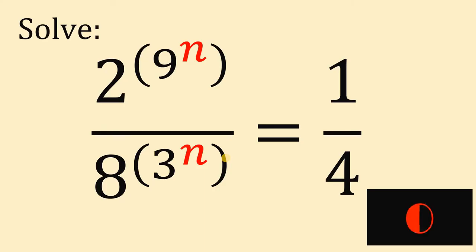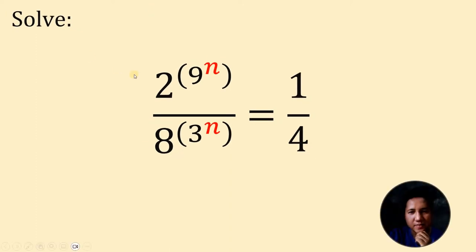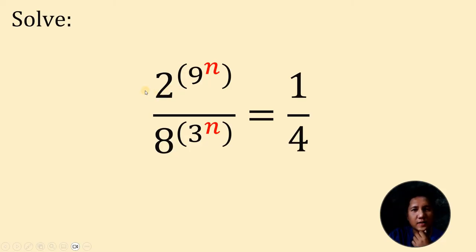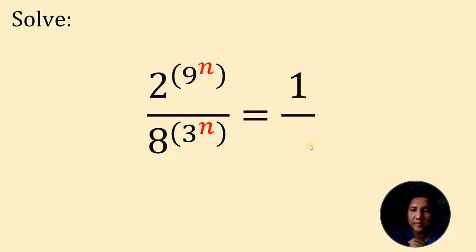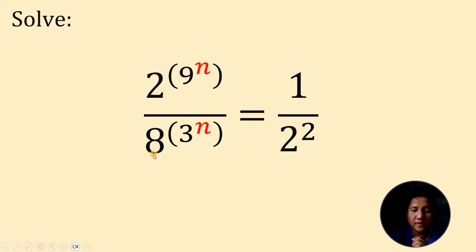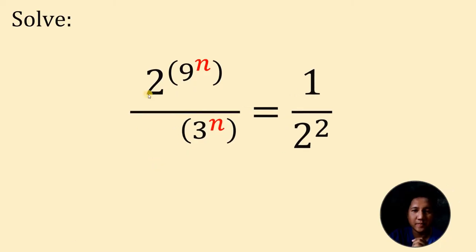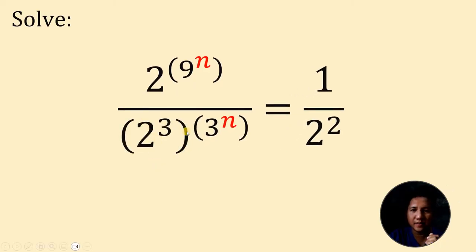And now, let's answer this question together. Our goal here is to solve for the value of n. To answer this question, I'd like to make the base equal to 2, because take note that 4 is 2 squared and 8 is 2 cubed. So this 4 can be replaced by 2 squared and this 8 can be replaced by 2 cubed. Now all of these bases are in terms of 2.